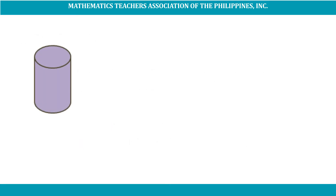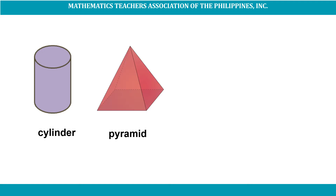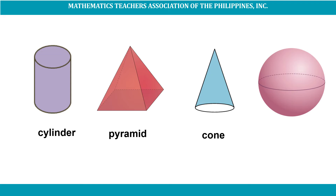Can you name the solids that I am going to show to you? This is a cylinder, a pyramid, a cone, a sphere.